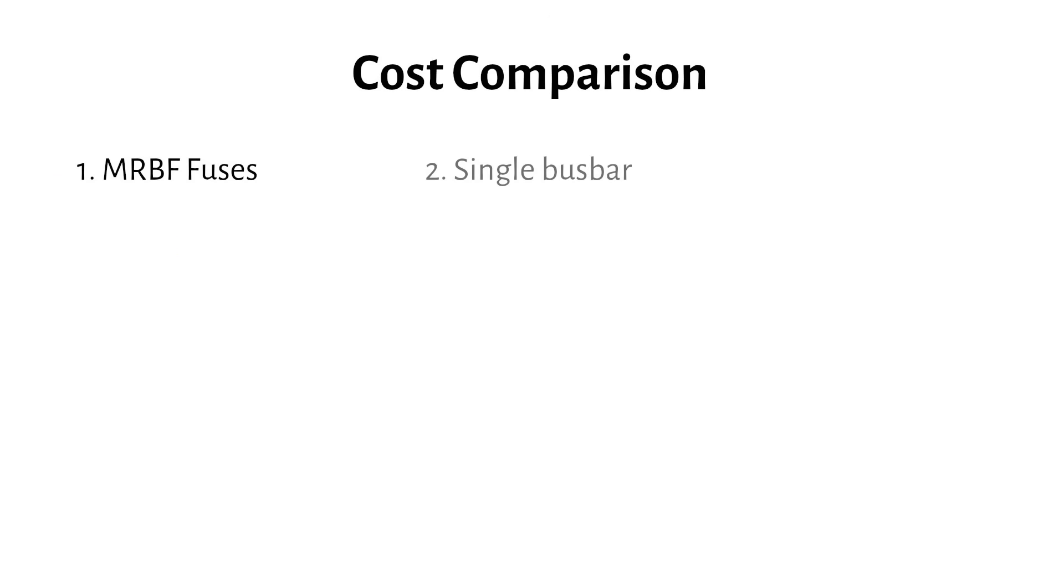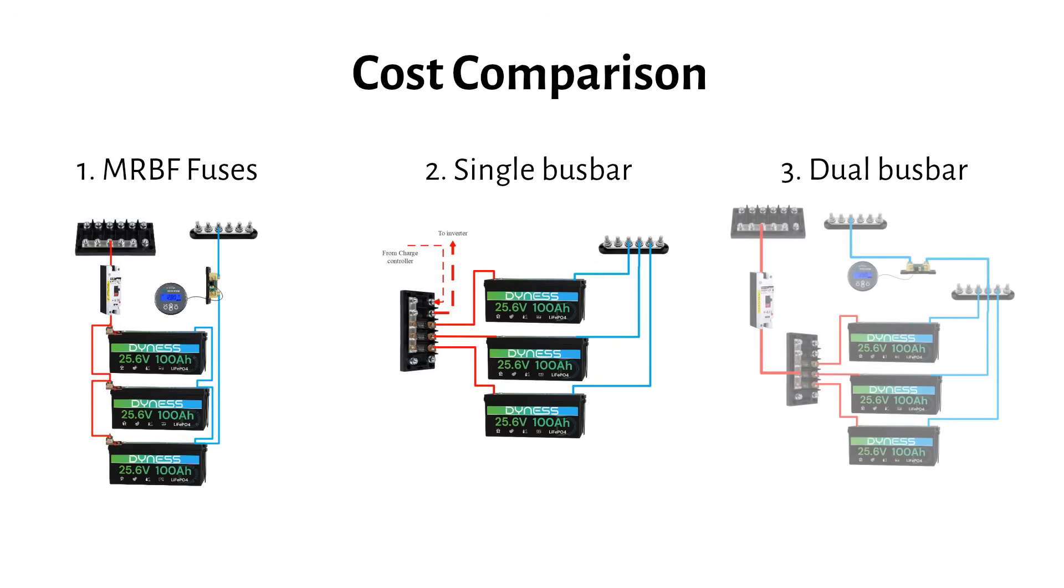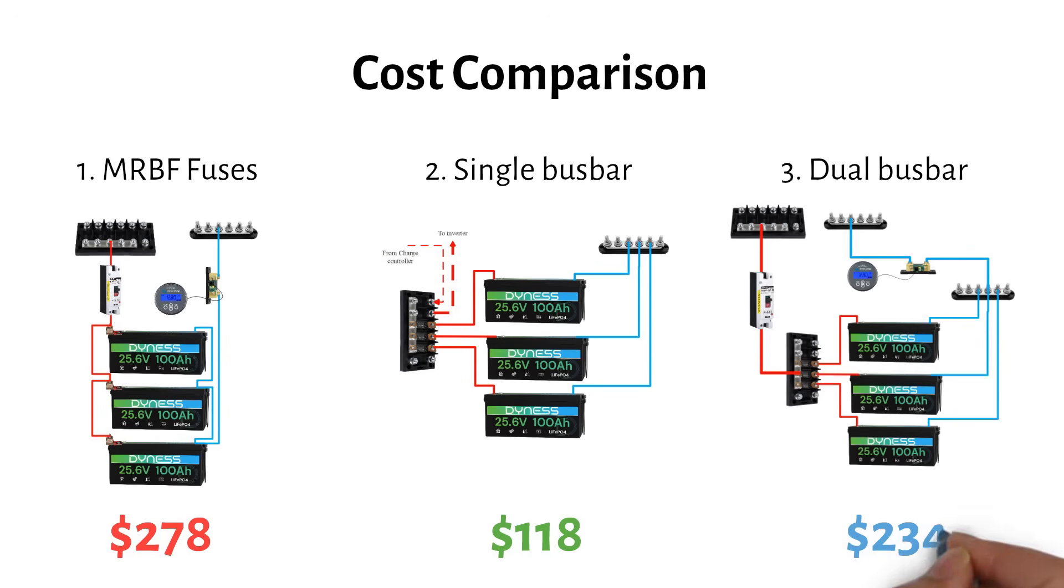Let's compare the actual costs for a system with three batteries and a 3000 watt inverter. These prices include the bus bars, fuses, and cables. Setup 1 with MRBF fuses will cost you $278. Setup 2 with a single mega fuse bus bar will cost you $118. And the third setup with dual bus bars will cost you $234. As you can see, the single bus bar system is significantly cheaper for three batteries. But remember, it's limited to 3 batteries maximum.